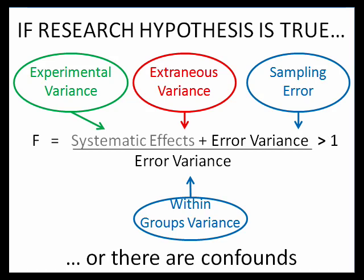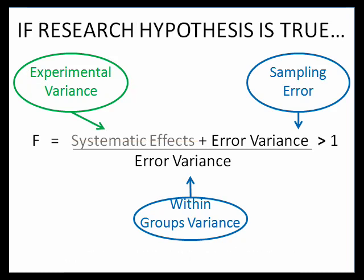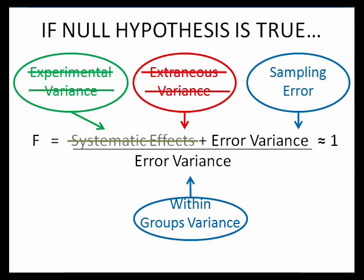Keep in mind that just because ANOVA is statistically significant does not mean it was necessarily your manipulation — it could be due to a confound, which could also result in a systematic effect. There are essentially three reasons why the F-statistic could be large: the research hypothesis is true, there is a confound, or it is a type 1 error.